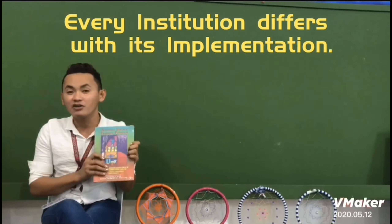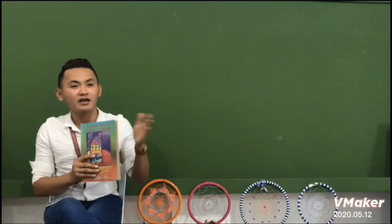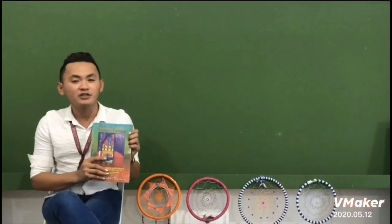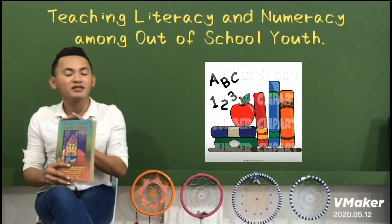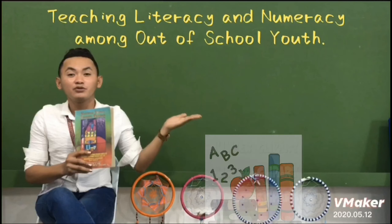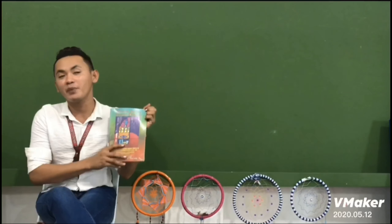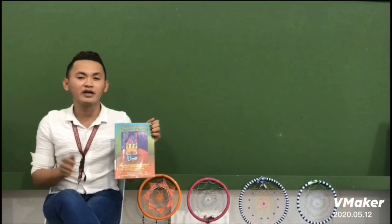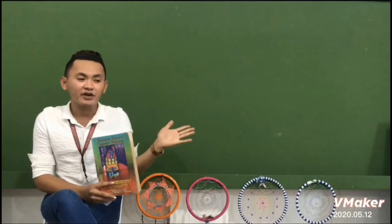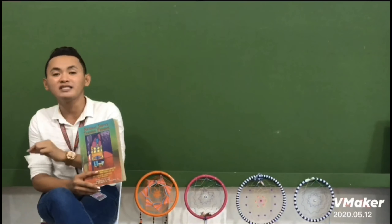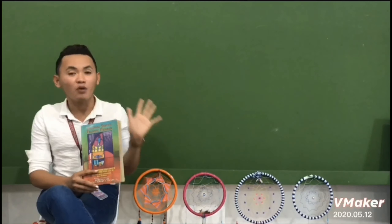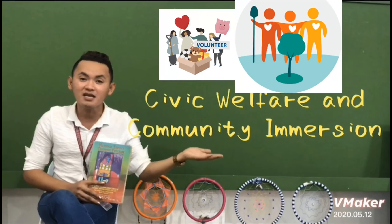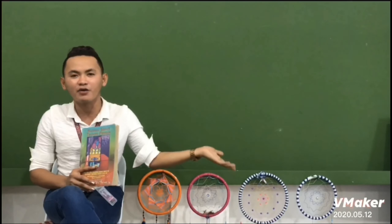Every institution differs when it comes to the selection of components. Some institutions give students the freedom to choose. However, in our institution, LTS is only offered to education students because this component teaches literacy and numeracy to out-of-school youth or children who cannot go to school — so education students really fit this component. ROTC is mandatory for criminology students, though other courses may also choose ROTC except education students. CWTS is open to all students and aims to involve them in community and social welfare service, helping those in far-flung areas or less fortunate communities.